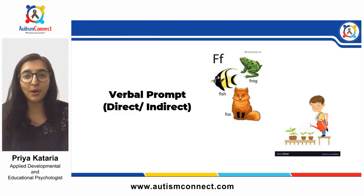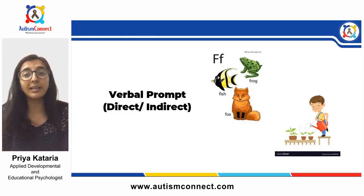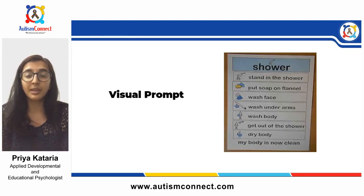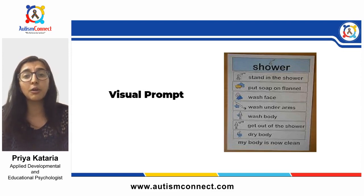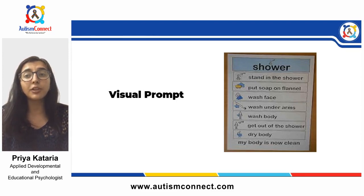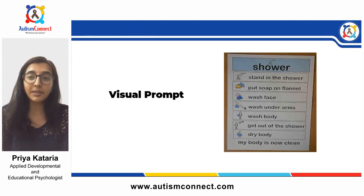The next is verbal prompt. Verbal prompting can take many forms and even within this type there are ways to increase independence. A direct verbal prompt gives the exact answer — for example, holding out a flashcard of the letter F and saying 'say F.' An indirect verbal prompt gives a hint without the full response — for example, when teaching how to water plants, after the student fills up the watering can, you say 'where should we go next?' That is an indirect verbal prompt.